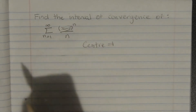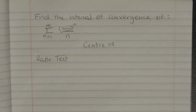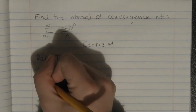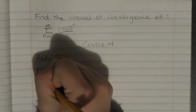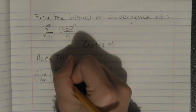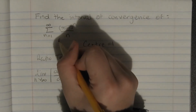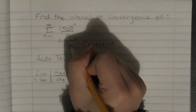To find the interval of convergence, we need to use the ratio test. It's a similar method to finding the radius of convergence of a series. We need to take the limit as n tends to infinity of |a_(n+1) divided by a_n| less than 1.